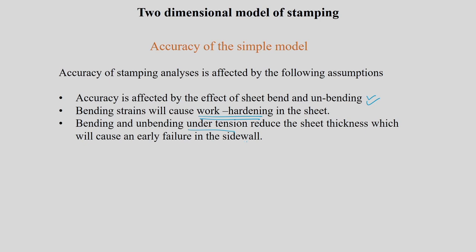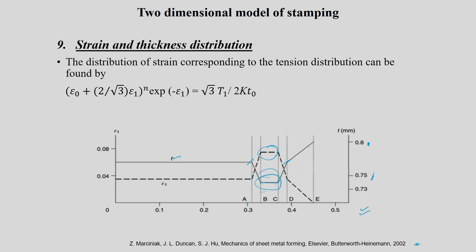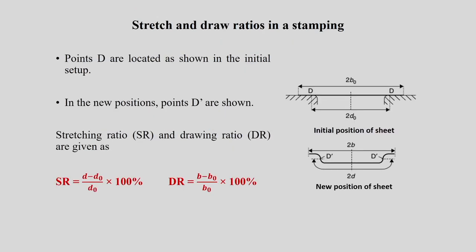The accuracy of this simple model is limited because we have not considered bending and unbending of the sheet at the corner locations. Sheet bending and unbending under tension causes additional strain hardening and reduces sheet thickness, which can cause early failure in the side wall. Therefore the side wall region — between the punch corner, die corner, and cup wall — requires careful attention.